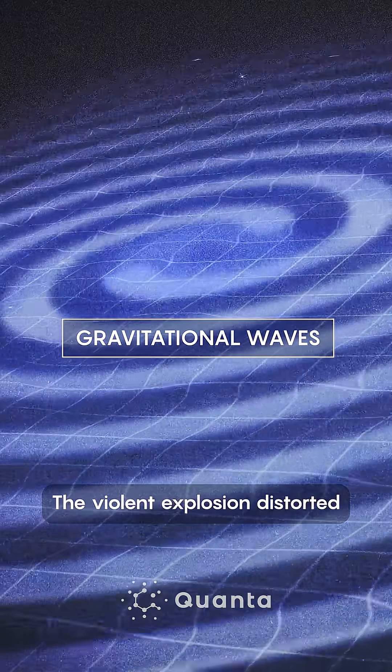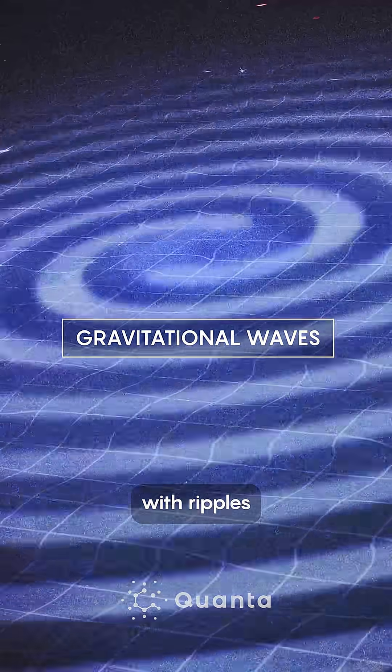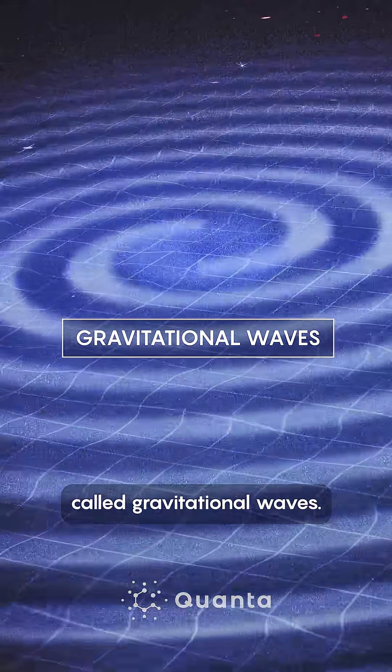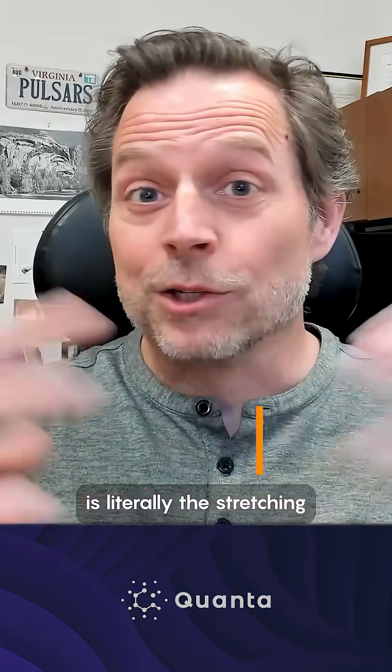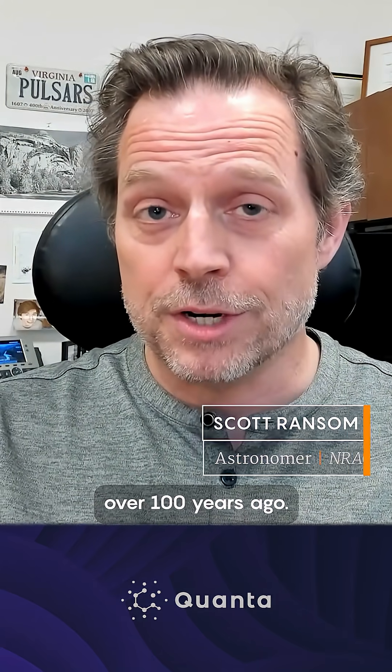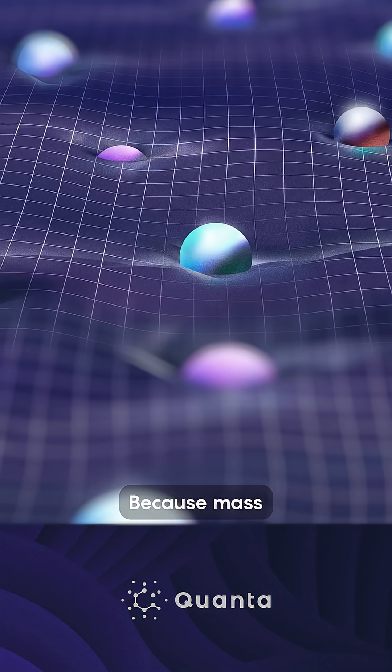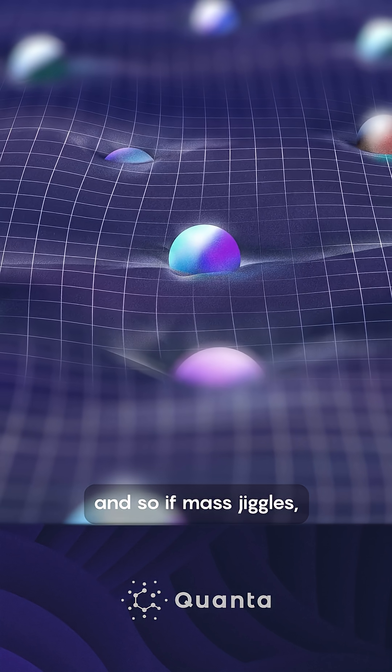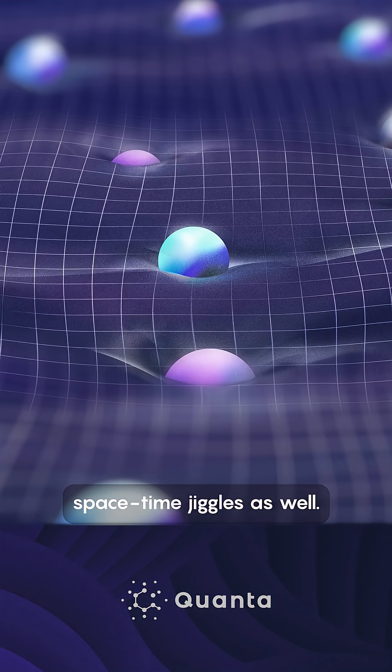The violent explosion distorted the fabric of space-time with ripples called gravitational waves. A gravitational wave is literally the stretching and compressing of space-time, as predicted by Einstein over a hundred years ago, because mass actually bends space-time, and so if mass jiggles, space-time jiggles as well.